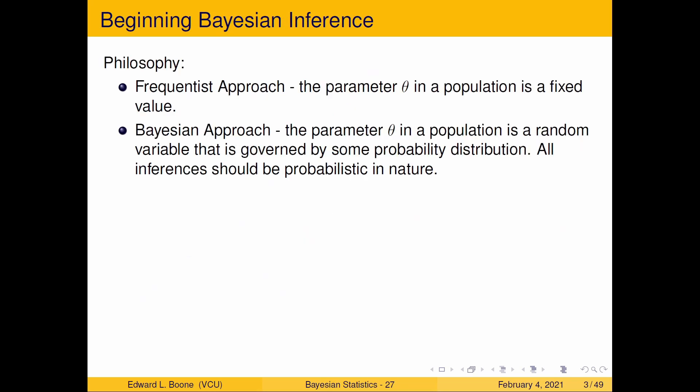So there's doing Bayesian inference, there's a philosophy change. The frequentist approach, the parameter θ is fixed, it's a fixed value in the population, it never changes. The Bayesian approach, the parameter θ is random. It's a random variable that's governed by some probability distribution. And because of this all inferences should be probabilistic in nature.